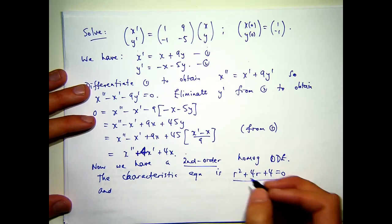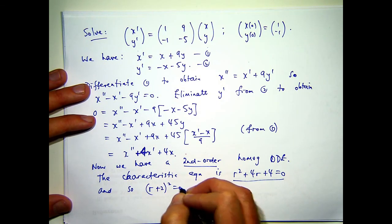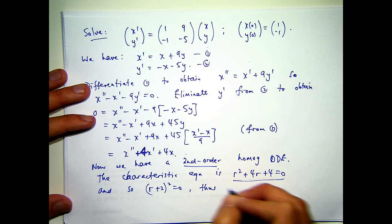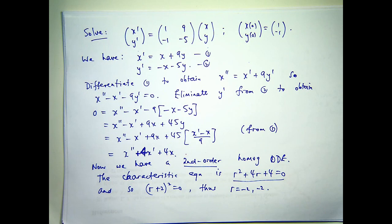It's r plus 2 all squared equals 0. So we get r equals minus 2 and minus 2, a repeated root.